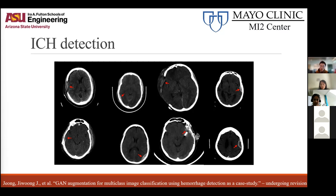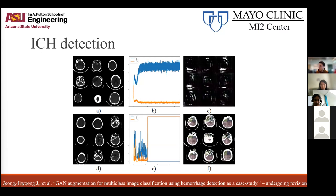Not to say everything was perfect — during training we saw the same problems of mode collapse and vanishing gradients. In the top row, we see the real images and a vanishing gradient example where the discriminator gets too strong too fast, resulting in just random noise output. In the bottom row, the generator collapses and only generates essentially just the skull, giving up on realistic-looking soft tissue — kind of generating realistic-looking skulls instead.